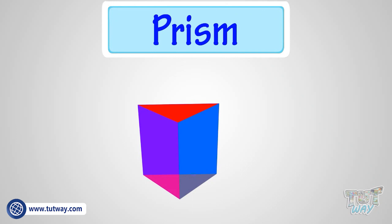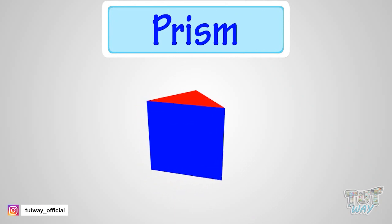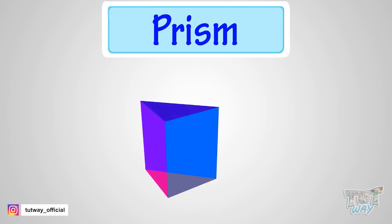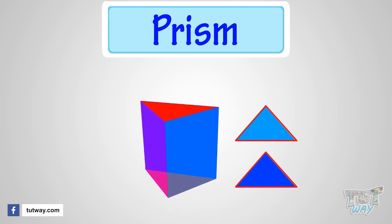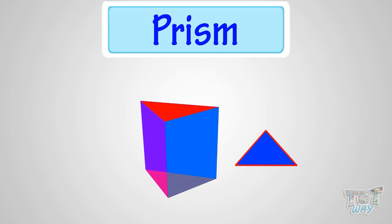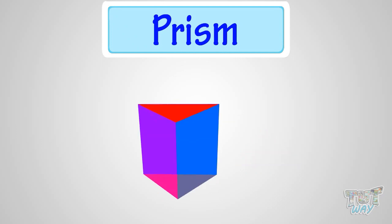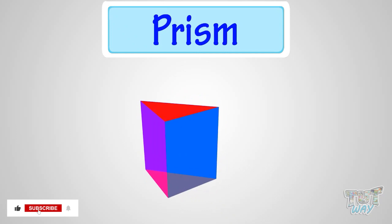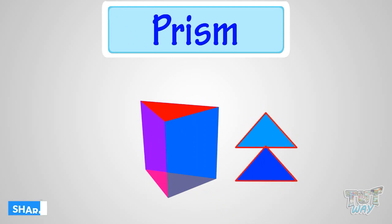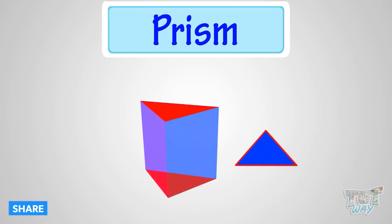In simple words, a prism is a 3D shape in which the top and bottom faces are the same shape and size, and all the other faces are rectangles.